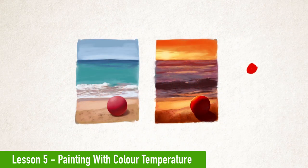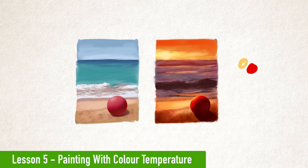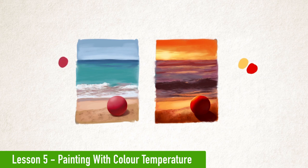If our beach ball here is red, then we are going to get a far more intense and fiery looking red beach ball in our sunset image because of the orange light that's now hitting it. Our midday sun image looks less intense because we've got the influence of the sky hitting down.